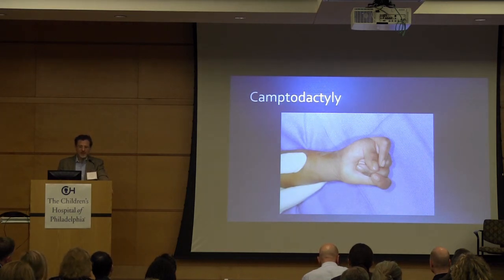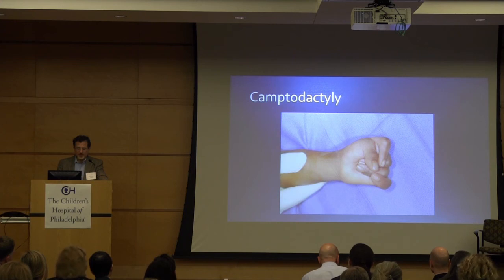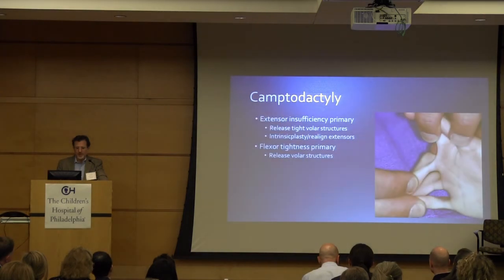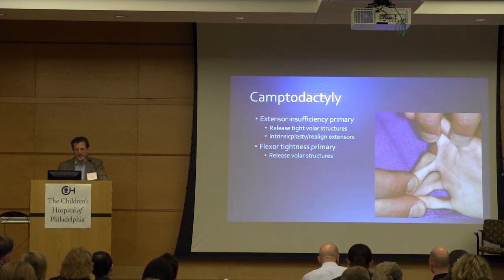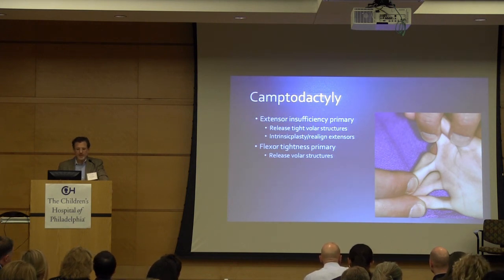Camptodactyly is very common in these children, and it's a very difficult problem to treat — our surgical success rate is certainly not what I would like. In the literature there's a division between extensor insufficiency as a primary cause, in which case the general recommendations are to release tight volar structures and augment the extensors, versus flexor tightness as primary, where just releasing the volar structure is recommended.